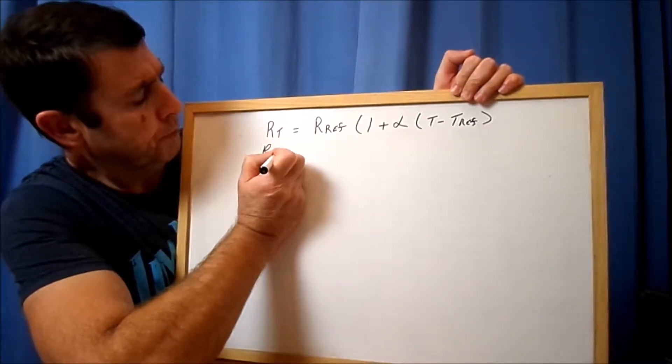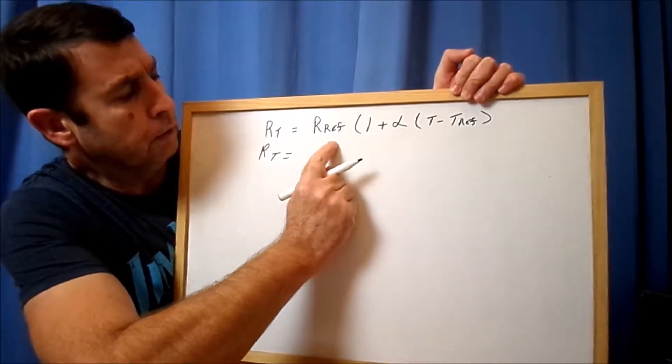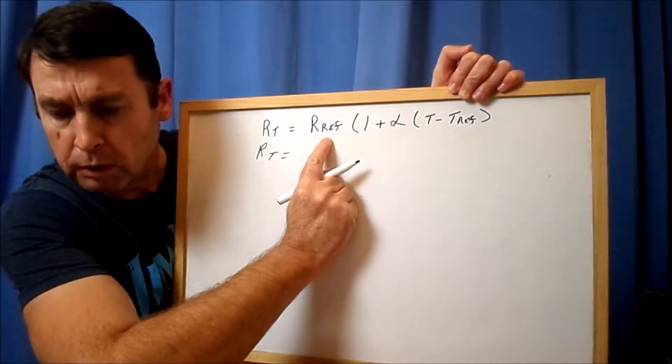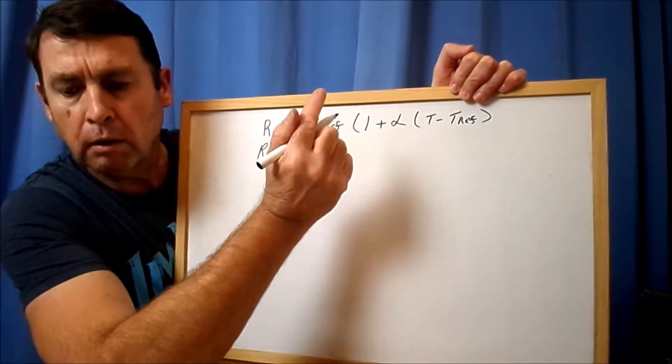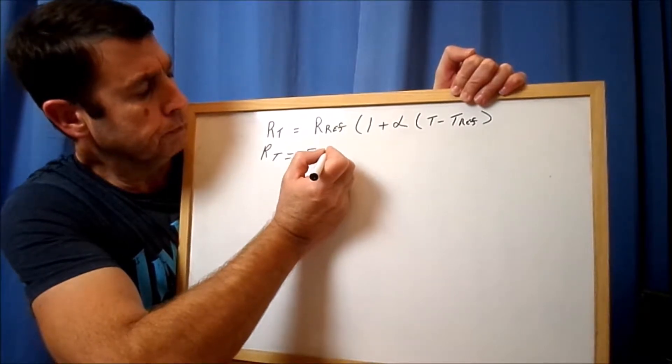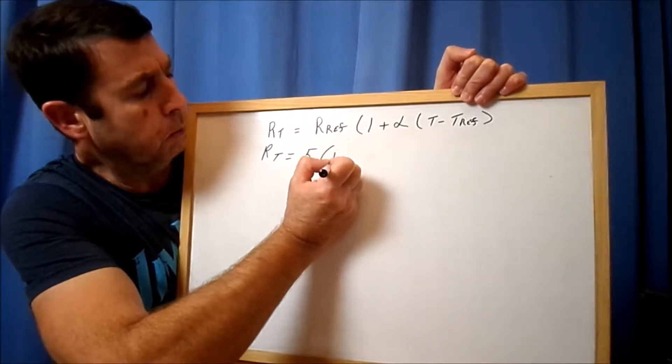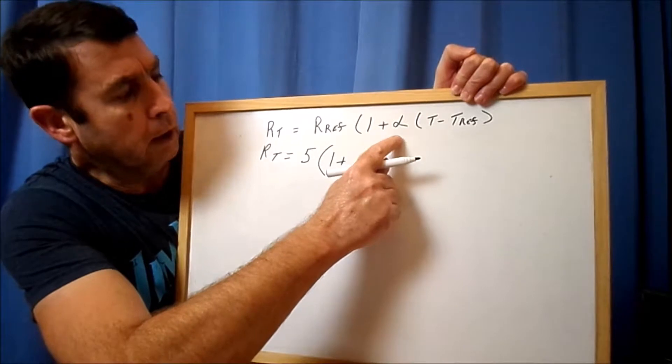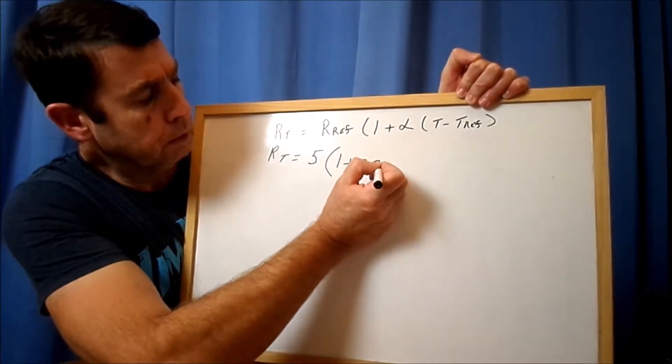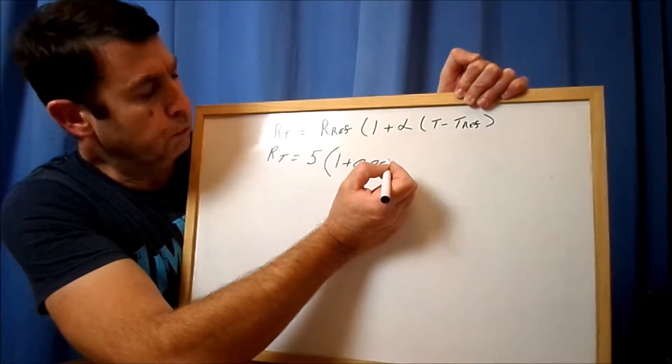All you have to do now to break this down is to start populating the numbers. First, we can say RT is equal to the reference resistance, so that's going to be 5 ohms.